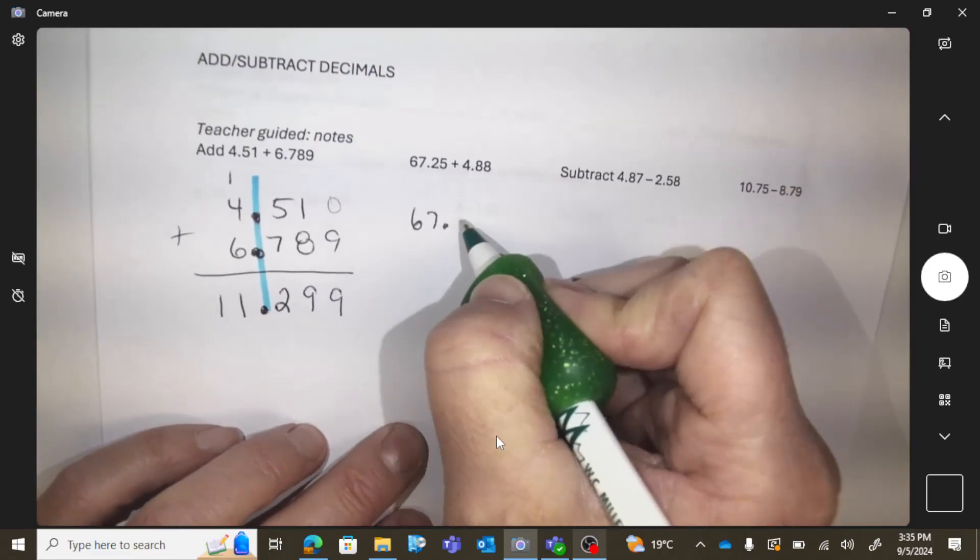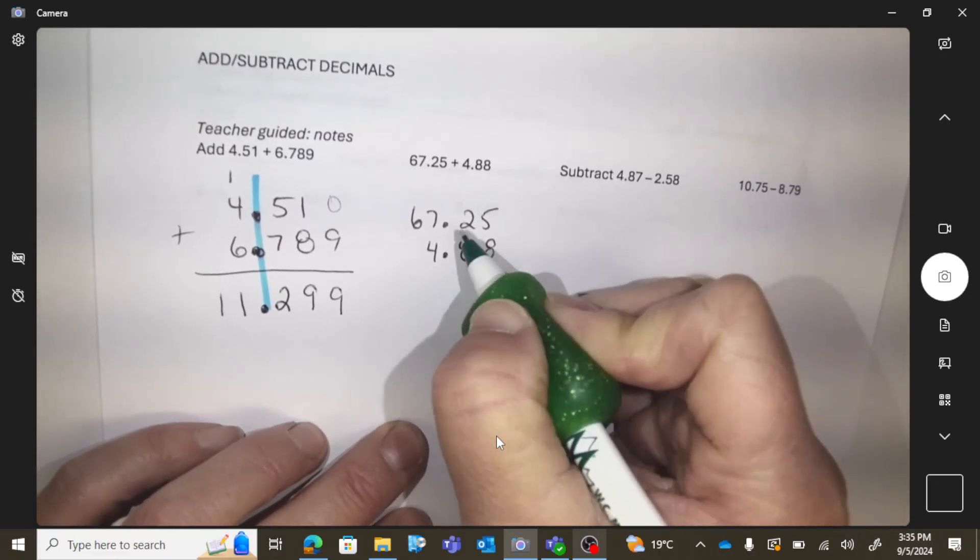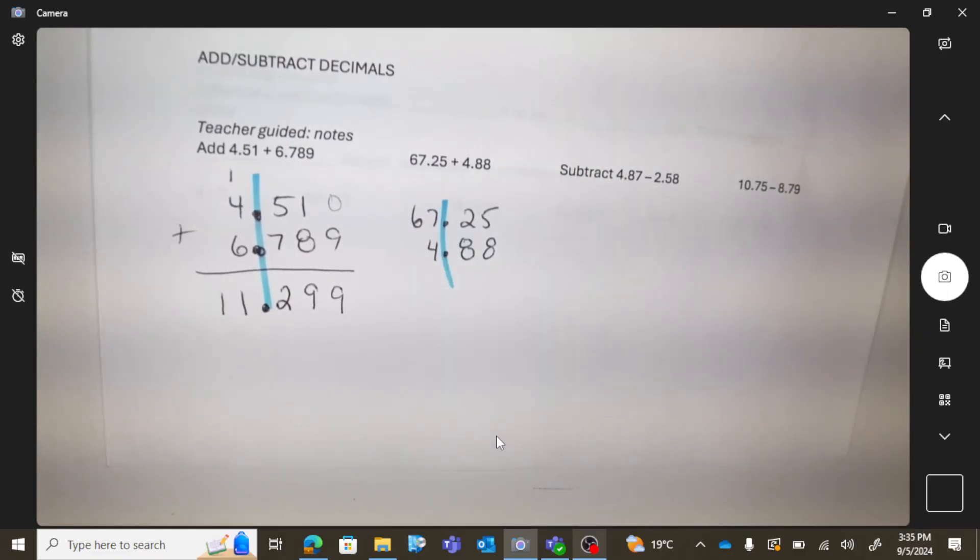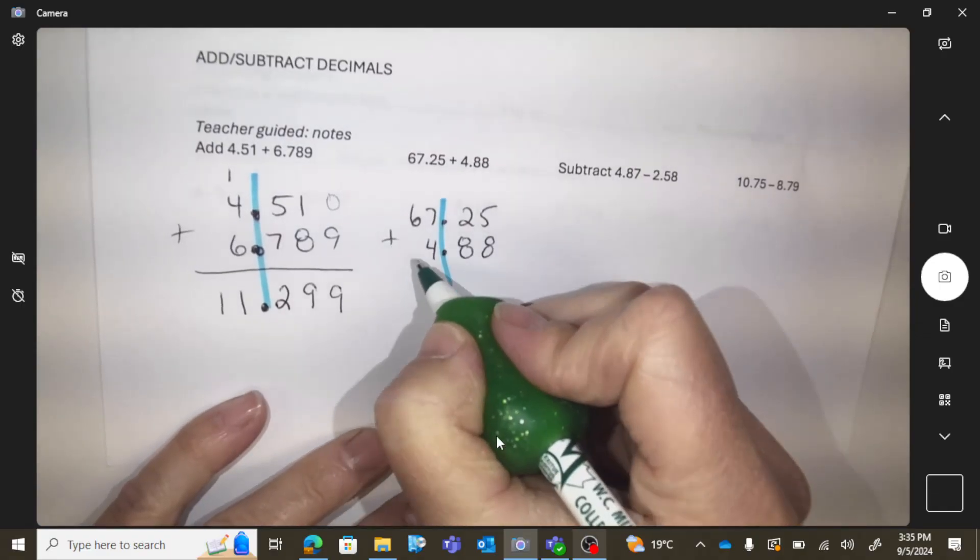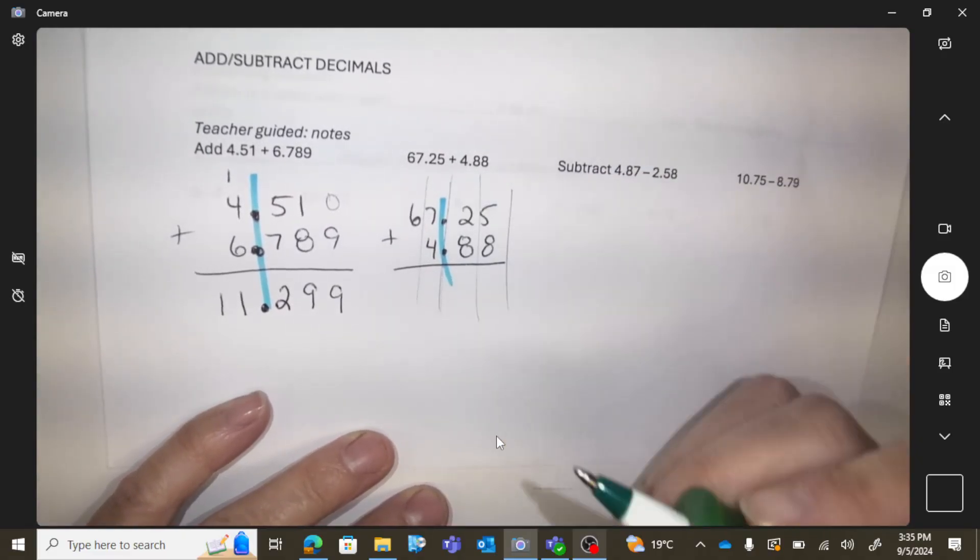Again, in question two you can see the most important thing is having those decimals lined up, and then you're working in these columns.